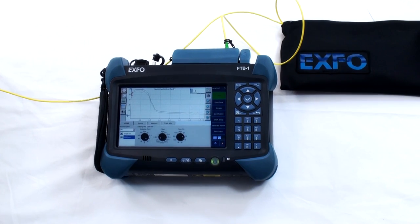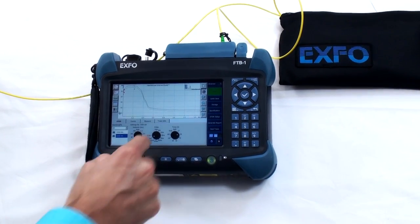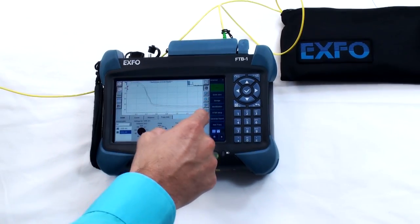I will start right away with a short pulse width to characterize the drop cable in order to see all the splices up to the splitter.